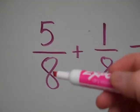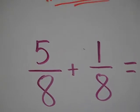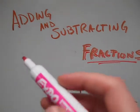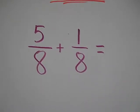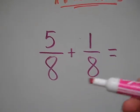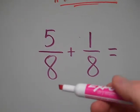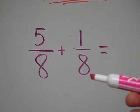My first example I have 5 eighths plus 1 eighth. Now in order to add or subtract any fractions, you need to make sure that the denominators are the same. In this example, the denominators are the same, they're in eighths. So I have 5 eighths, and I'm adding 1 eighth.